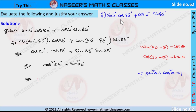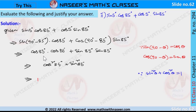Second problem: sin 5° cos 85° + cos 5° sin 85°. To solve this, we write 5 degrees as 90 minus 85 degrees. By using the complementary angle identities, sin(90° − 85°) = cos 85° and cos(90° − 85°) = sin 85°. The resultant equation becomes cos 85° × cos 85° + sin 85° × sin 85°.